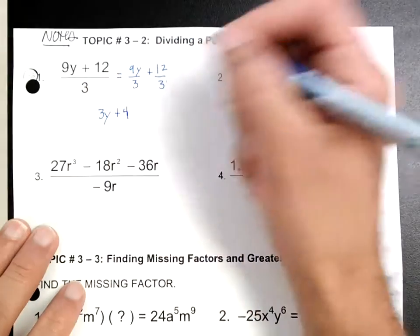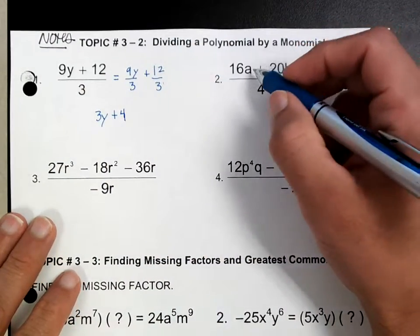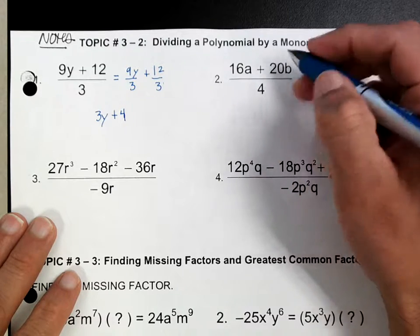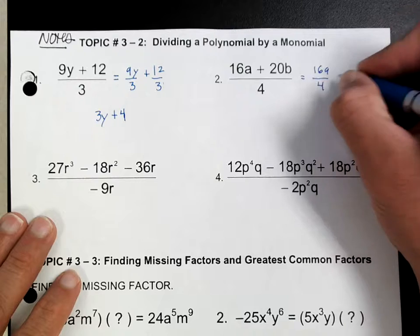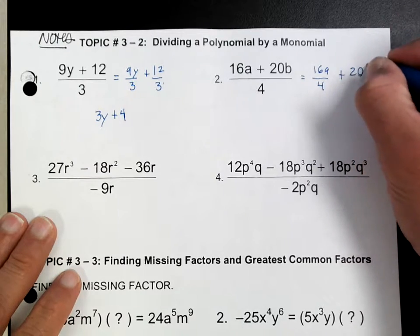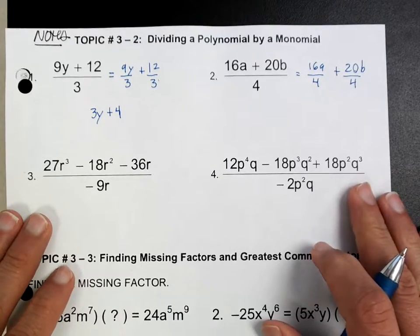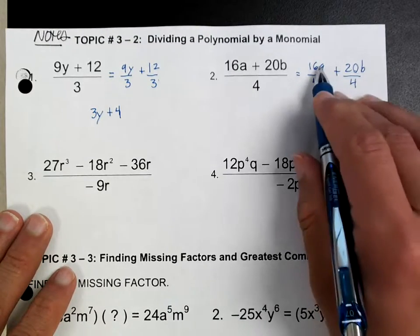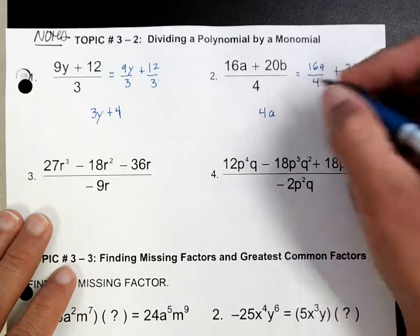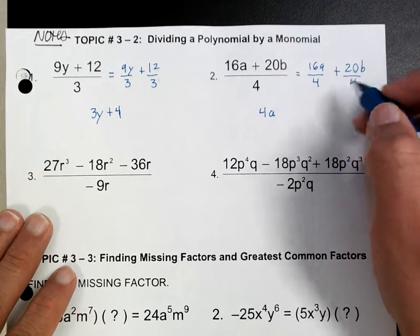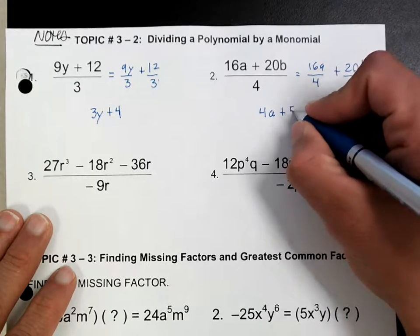Now on the next one it's the same idea. On number two you're just dividing this term by 4. If you want to, you can write it separately if that makes it easier, or you could even do this mostly in your head. So we got 16a divided by 4 — that's going to be 4a. And then 20b divided by 4 is going to be 5b.